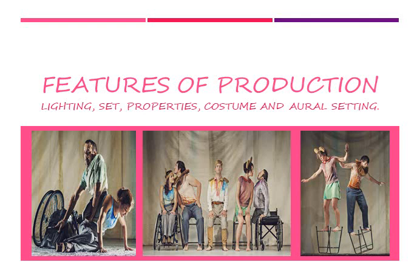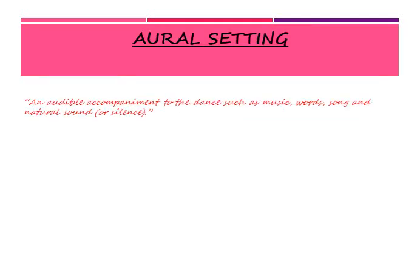Moving on now, we're going to be looking at the features of the production. This will include the lighting, the set, properties, costumes, and the aural setting. The aural setting means an audible accompaniment to the dance, such as the music, words, song, and natural sound or silence — so we're thinking about what we can hear throughout this piece of work.